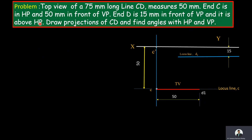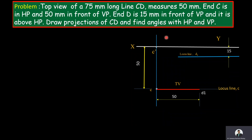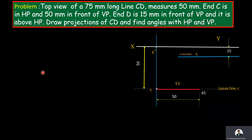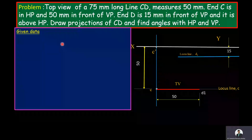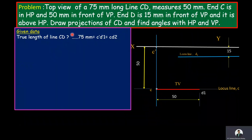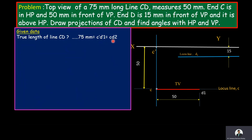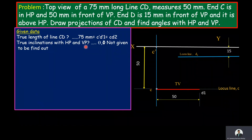End D is above HP, meaning its front view, D-dash, is above the XY line — the distance is not given and must be found. Now we'll write the data. Before that, we need to recollect the terminology used under projection of a straight line inclined to both planes. The length of line CD is 75 mm. C-dash D1-dash is the true length in the front view and C-D2 is the true length in the top view.